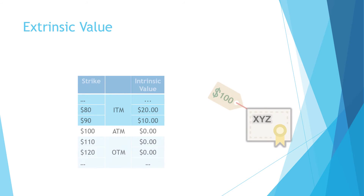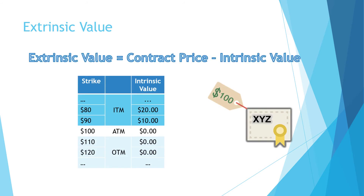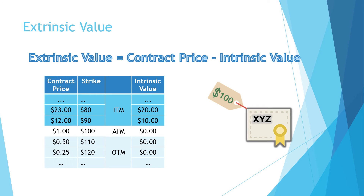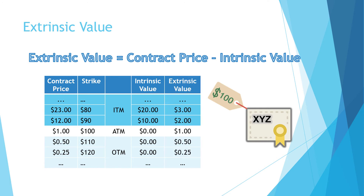Now let's look at extrinsic value. Bringing back the intrinsic value table, if the contract prices listed in the option chain are as shown, subtracting intrinsic value from the contract price gives us the extrinsic value. For strike 80, the contract price is $23 and intrinsic value is $20, so extrinsic value is $3. For strike 90, the contract price is $12 and intrinsic value is $10, so extrinsic value is $2.